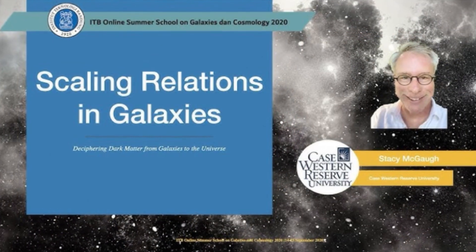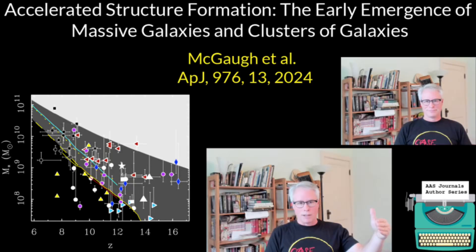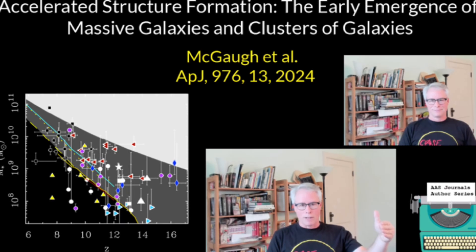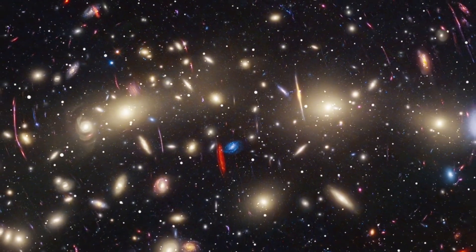Stacy Maga is an astrophysicist at Case Western Reserve University in Ohio. He's been a long-time supporter of MOND, a theory that offers a completely different explanation for galaxy formation and behavior. And now, looking at the Webb telescope's findings, Maga says it plainly.